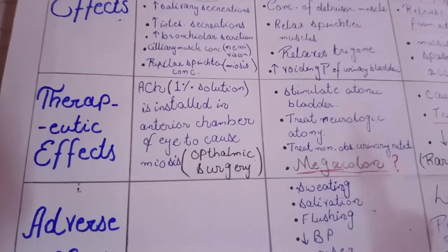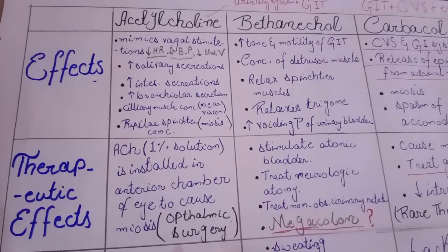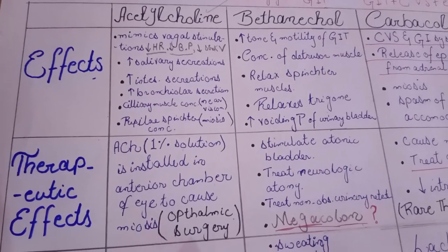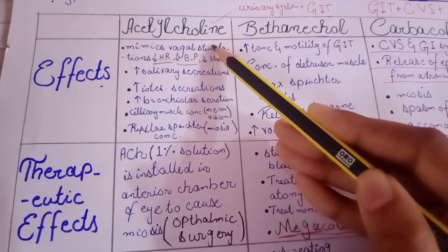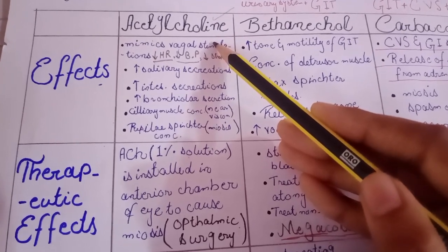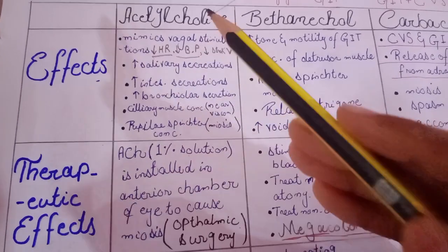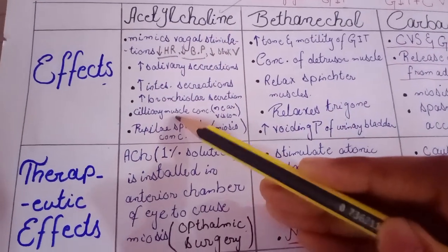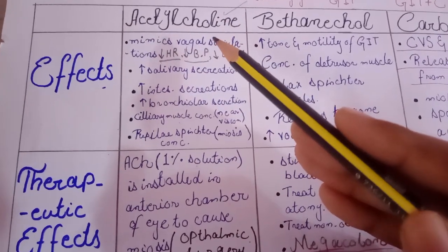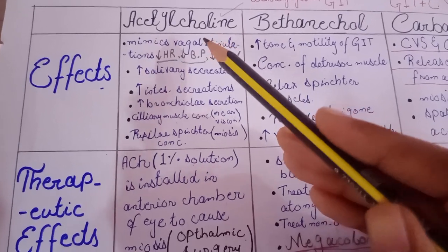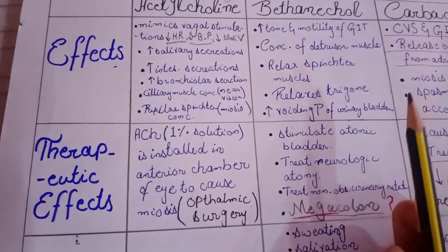Regarding therapeutic use, acetylcholine is rarely used. Why rare? Because it has two main problems. One reason is that acetylcholine is very non-specific in its action, so it can affect any organ of the body rather than a specific target. The other reason is that acetylcholine is readily hydrolyzed by the enzyme acetylcholinesterase, so acetylcholine has a very decreased half-life. For these reasons, it is rarely used for therapeutic purposes.